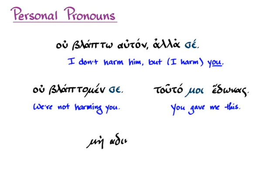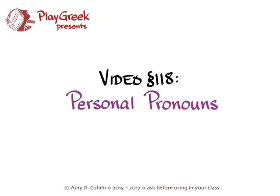One more example: me adikeite hemas — 'Don't wrong us.' There are no different emphatic or unemphatic forms in the plural personal pronouns, so it would be context or perhaps some particles that would tell you whether this is emphatic. Here it simply means 'don't wrong us' — nothing emphatic about it. I hope that's a good start for you on personal pronouns. Use the drills in Hanson and Quinn to practice using them and their different emphases.